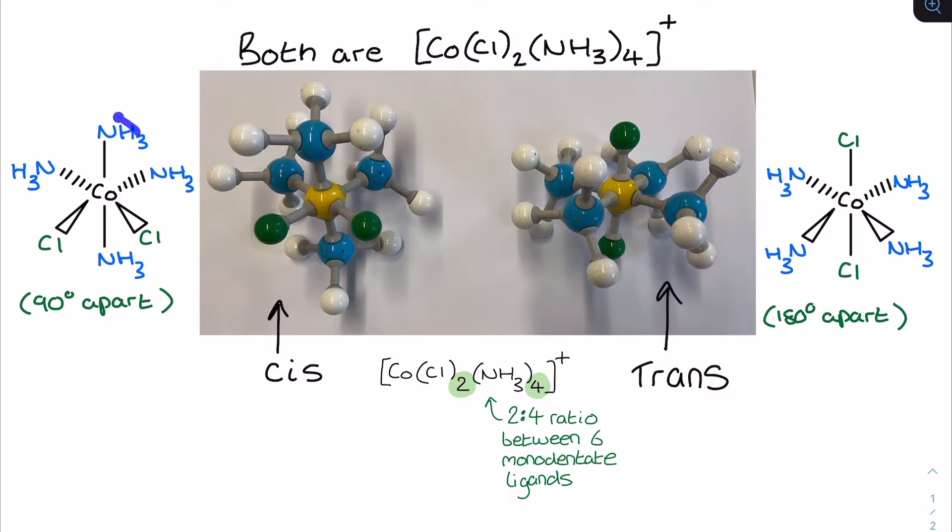So I could have shown them one at the top and one at the side. They would still be 90 degrees apart. That's this molecule, but just spun around a little bit. The important thing is the two Cls are 90 degrees apart, and so that means that this structure is an example of the cis stereoisomer.